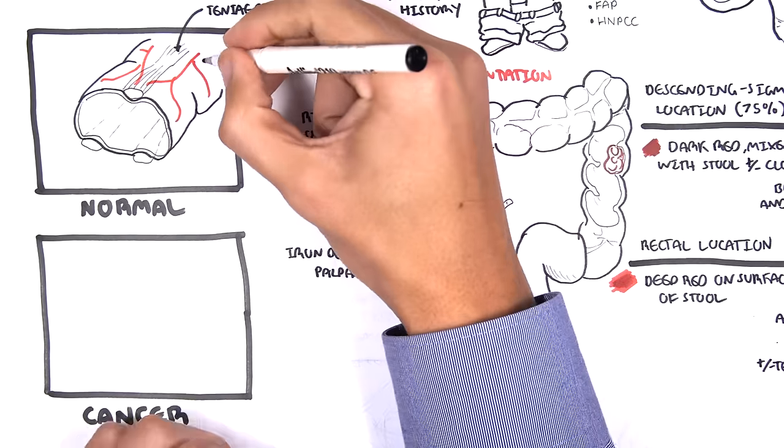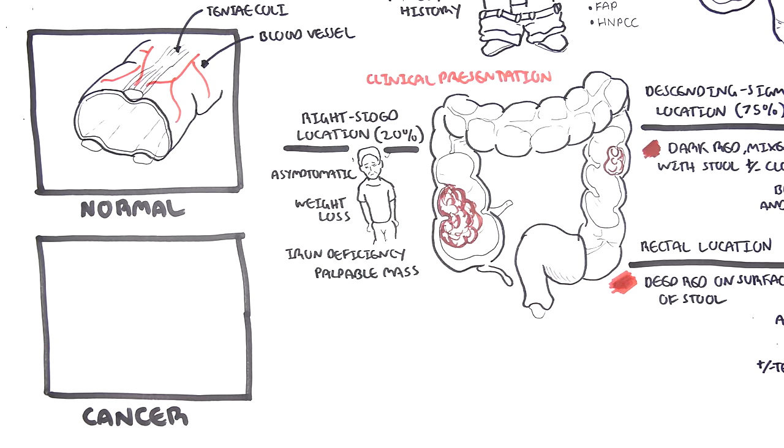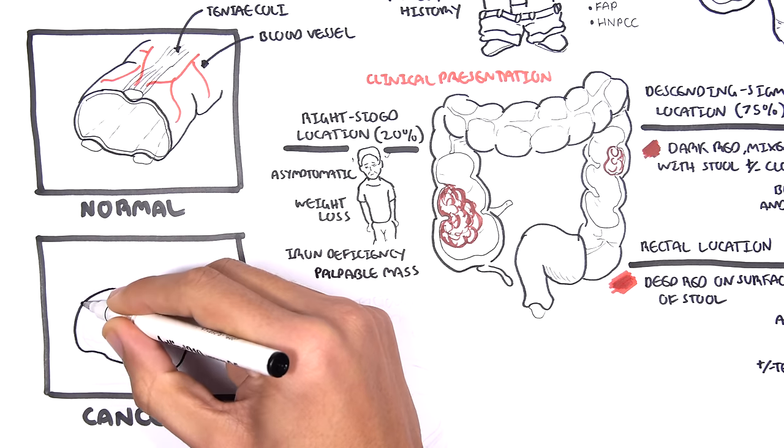The colon is supplied by arteries that branch from the inferior mesenteric artery. The inferior mesenteric artery further branches into smaller arteries, which anastomose with each other. These have importance when part of the colon is being resected, because we want to maintain blood flow to the remainder of the colon.